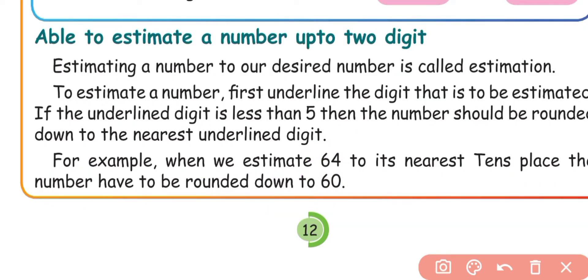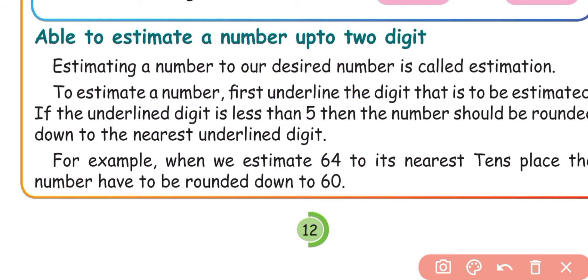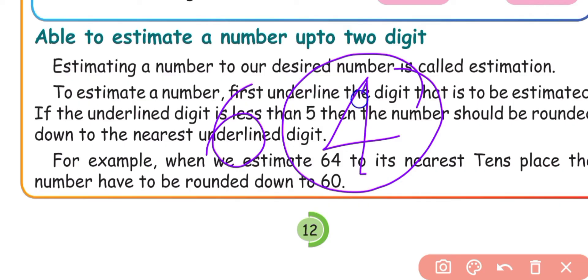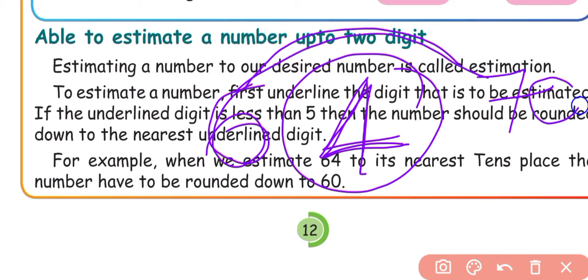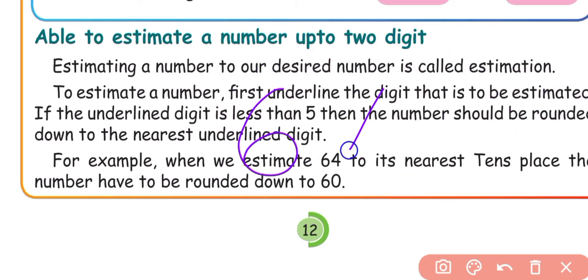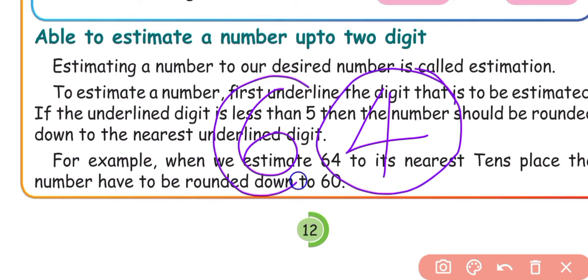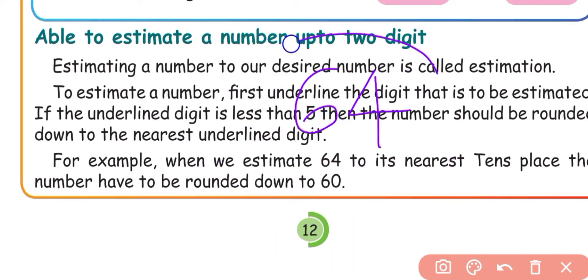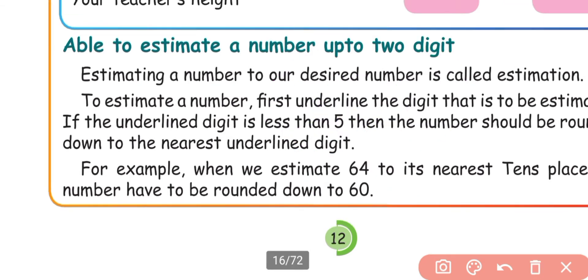If the underlined digit is less than 5, then the number should be rounded down to the nearest underlined digit. For example, when we estimate 64 to its nearest tens place, the ones place digit is 4. Since 4 is less than 5, the number is rounded down to 60.